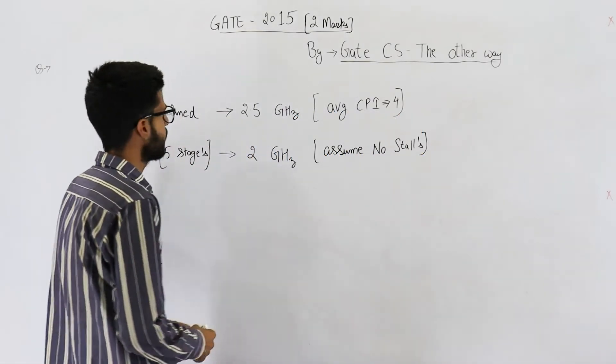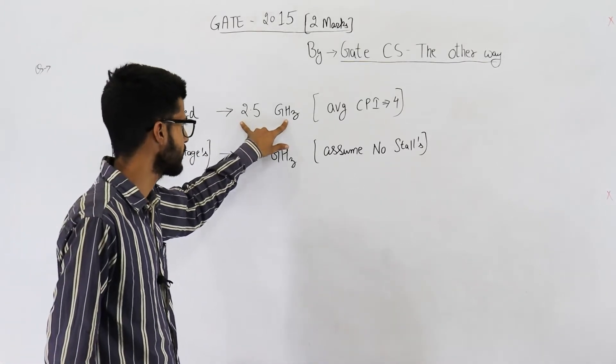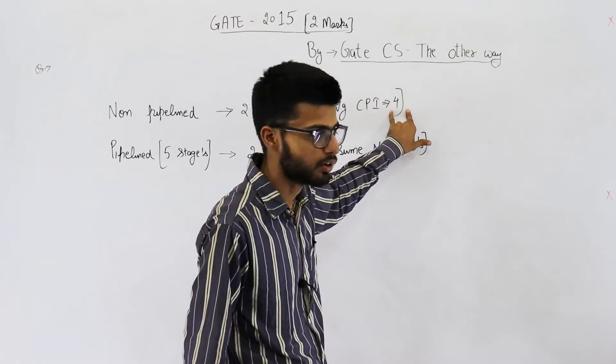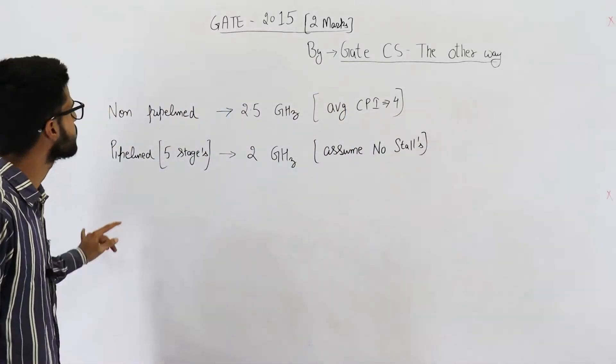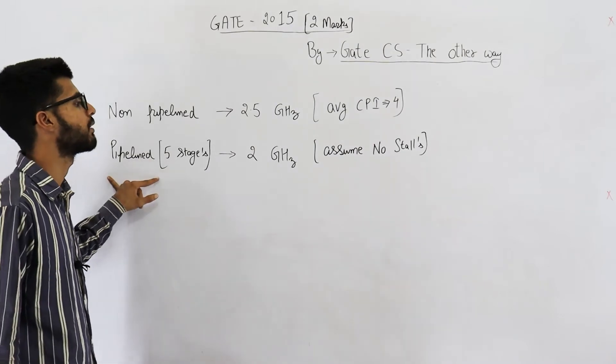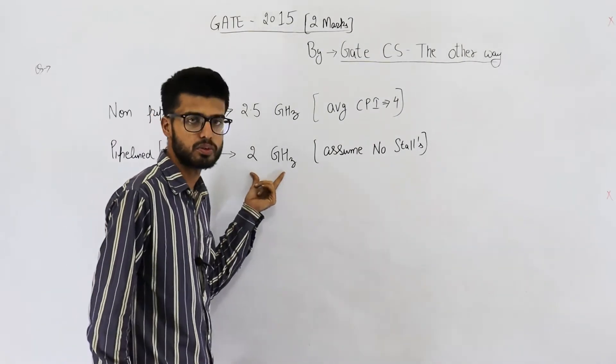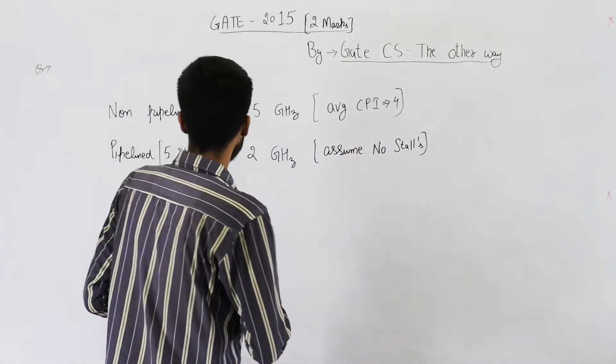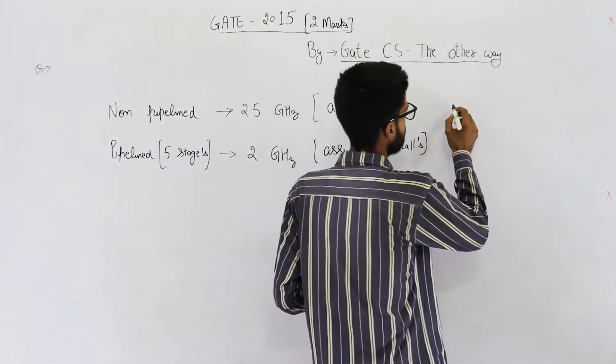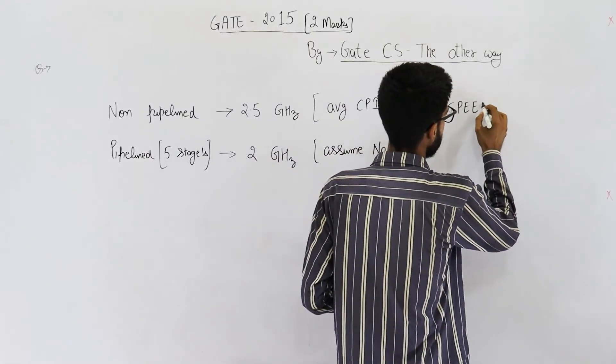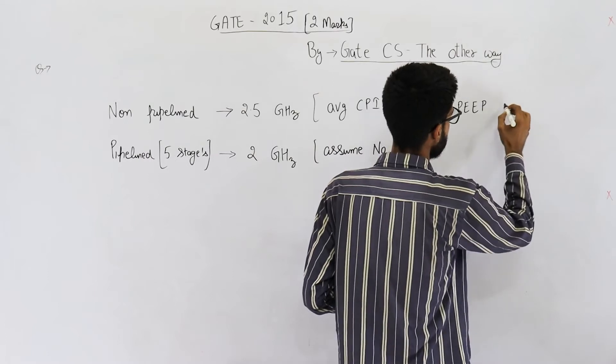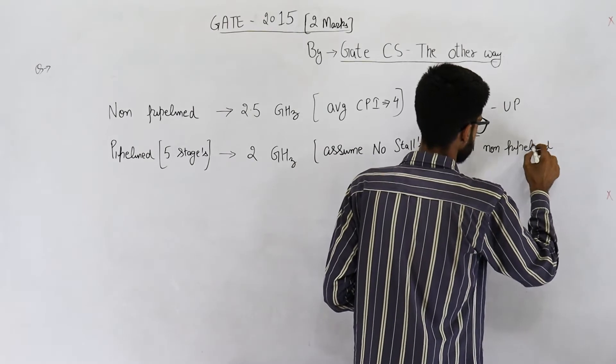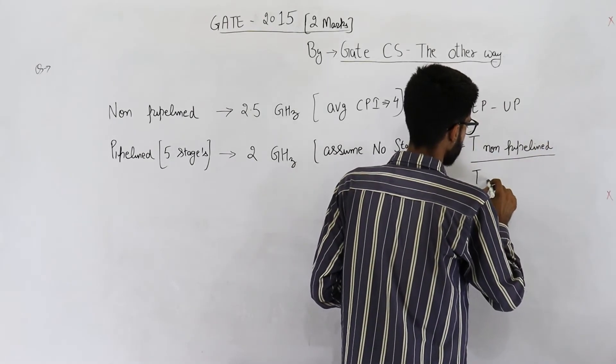So, you are given that a processor runs at 2.5 GHz and each instruction takes 4 clocks on average. The same processor is then upgraded to a pipelined version, but the frequency is reduced to 2 GHz. You need to find out the speedup. Now, formula for speedup is time taken by non-pipelined version divided by time taken by pipelined version.